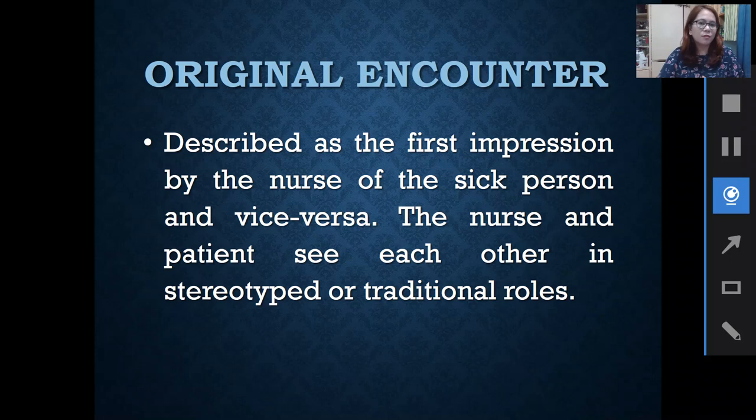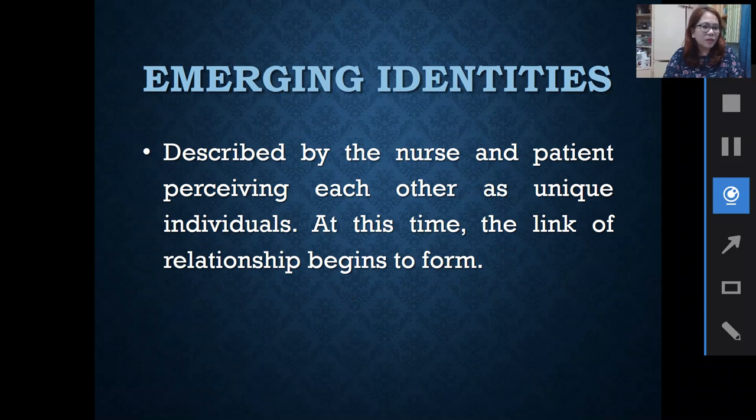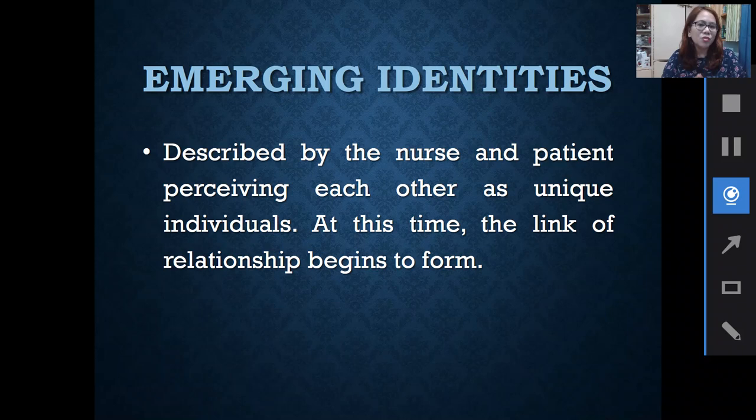In emerging identities, she described it as wherein the nurse and the patient perceive each other as unique individuals. They move beyond seeing each other in stereotypical roles — the nurse as only a nurse and the patient as only a patient. At this time, the link of the relationship begins to form, and there is a deeper connection.